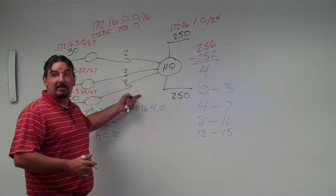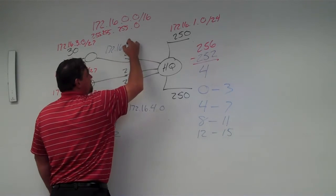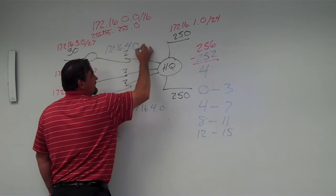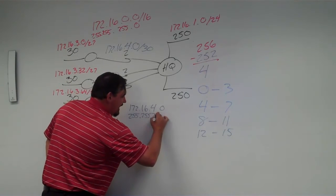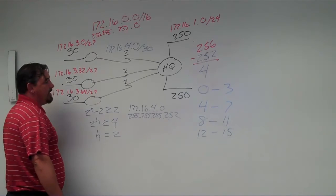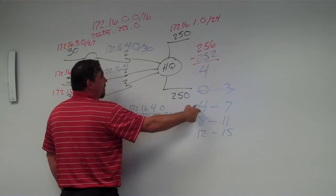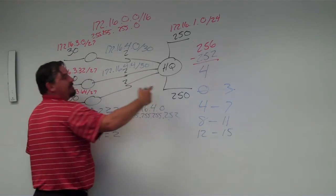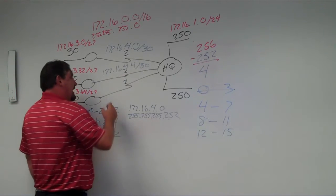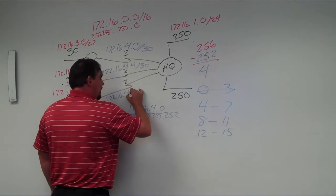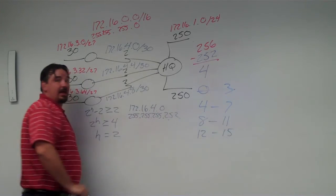So we assign 172.16.4.0 /30 to the first point-to-point link. The next subnet is 172.16.4.4 /30, with usable addresses .5 and .6, and .7 as the broadcast. The third is 172.16.4.8 /30, with usable addresses .9 and .10, and .11 as the broadcast address.